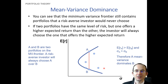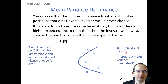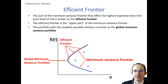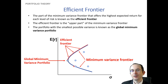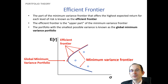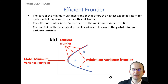Mean-variance dominance means that if the expected return on one asset is higher than another while their standard deviations are the same, then asset A is mean-variance dominant to asset B. Graphically, every point on the frontier above the minimum variance portfolio forms what we call the efficient frontier. The efficient frontier mean-variance dominates its counterparts on the inefficient frontier, and the global minimum variance portfolio is included as the lowest point since nothing dominates it.